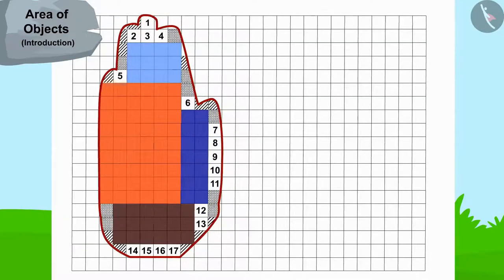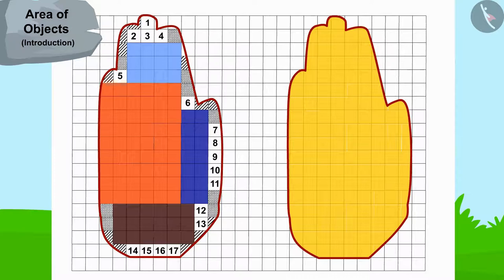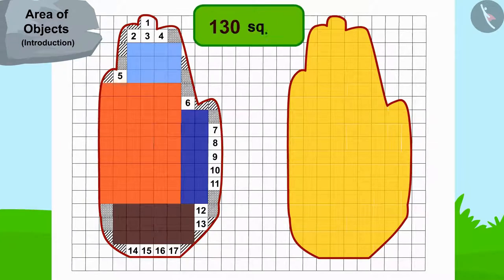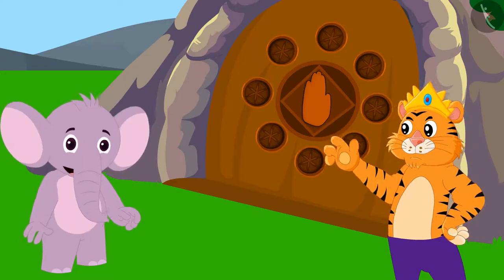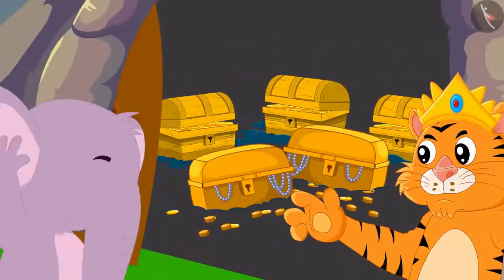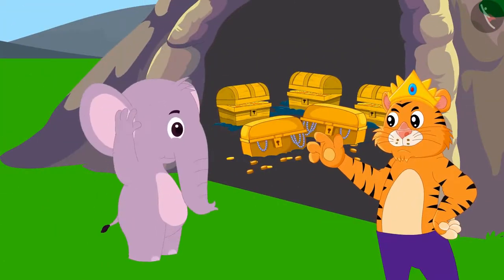Appu's hand impression matched the impression on the cave door. The king opened the door with Appu's help and gave him half of the treasure in return.